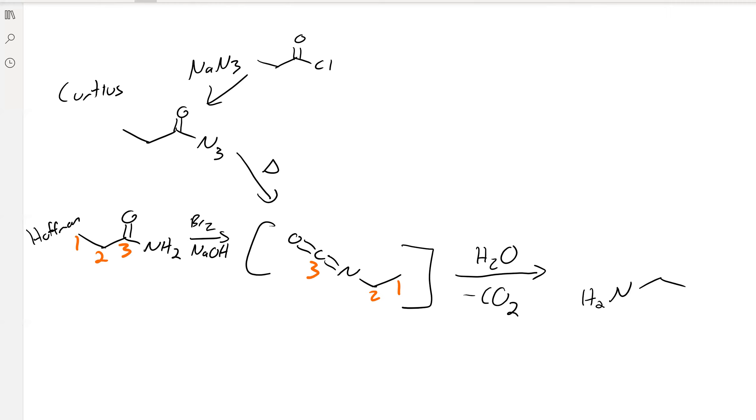And you'll form an amine. In this case, this would be carbons number 1 and 2 from our previous structure. So note that this is a rearrangement and you're losing carbon dioxide, so you're going to lose one of the carbons. And again, this is the isocyanate, and that's the intermediate.